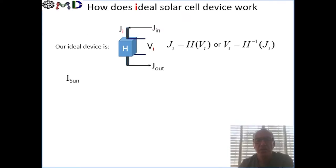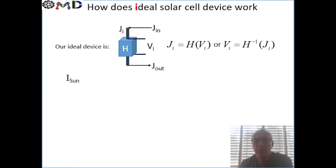So before going into the physics, let's first look at it from the device point of view. Just remember, we are still dealing with an ideal solar cell device, and the idea is that we know how this device behaves — we know its transfer function, which means that we know the relation between the current and the voltage. And of course, if we know that, we can also derive the reverse relation.